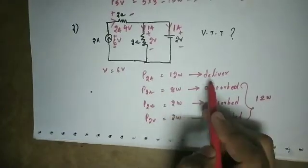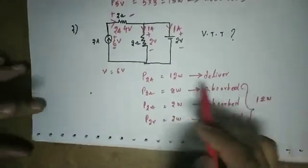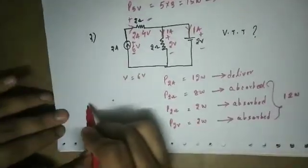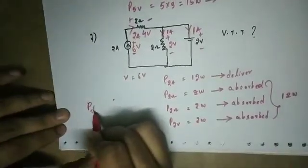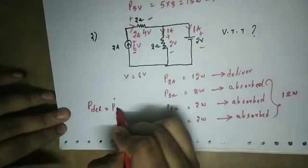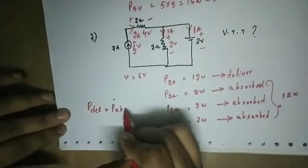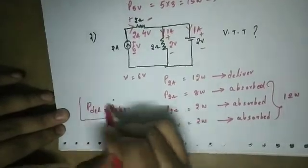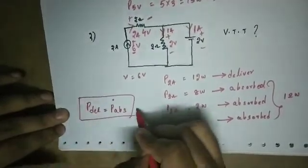Delivered power is 12 watts. Delivered power is equal to absorbed power, so Tellegen's theorem is verified.